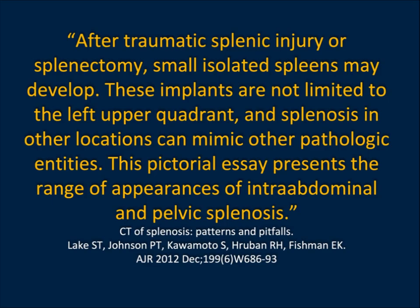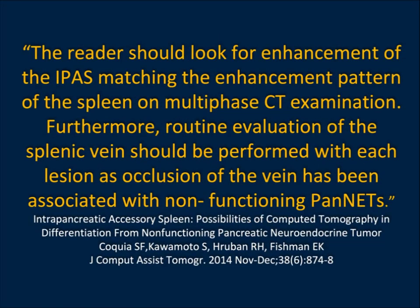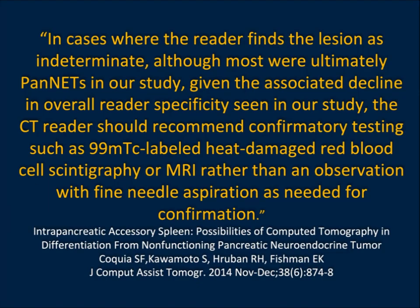Post-splenectomy or post-splenic trauma, isolated splenules can develop and could be in the lung, the pelvis, or next to the aorta, simulating many different pathologies. When we talk about an accessory spleen by the tail of the pancreas, typically the patient has not had trauma. If you're not certain whether it's a tumor or a spleen, 99mTc-labeled heat-damaged red blood cells work well, and MRI can also be helpful. They're not perfect either, but often you can make the diagnosis without biopsy or an invasive procedure.